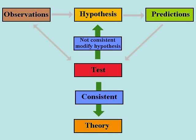This is a flowchart of the scientific method. It starts with observations. Those observations are used to derive a hypothesis about what is happening. That hypothesis is then used to make predictions about future observations.